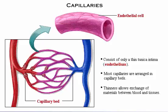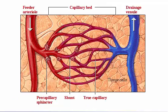The capillaries consist of only a thin tunica intima, allowing exchange of materials between blood and tissues. Blood flow regulation occurs at the capillary beds. The feeder arteriole brings blood to the capillary bed. The shunt is a short vessel that directly connects the feeder arteriole and the drainage venule at the opposite end of the bed. Exchanges of materials take place between tissue cells and the blood in the true capillaries. The precapillary sphincter is a cuff of smooth muscle fibers that surrounds the root of each true capillary, acting as a valve to regulate the flow of blood into the true capillaries.